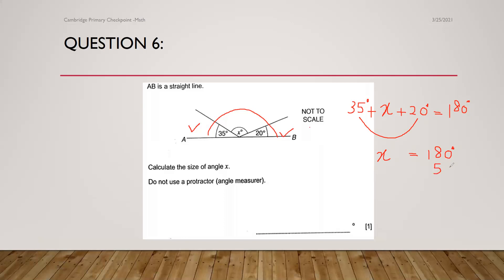I have to add 35 plus 20, which is 55. Then to find the value of X, I have to take away 55 from 180. When I subtract — borrowing: 10 minus 5 is 5, 7 minus 5 is 2, and 1. So the value of X is 125 degrees. Remember, first you have to use the theory and according to that, you can find the value for the missing letter.